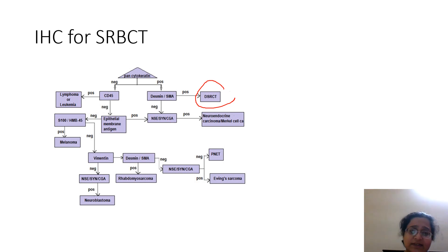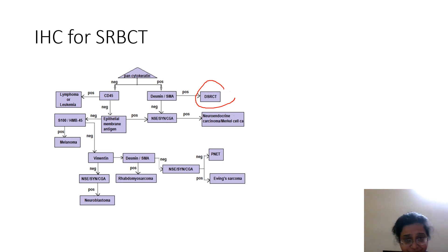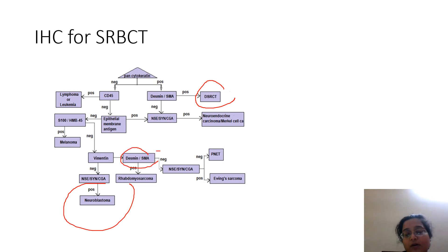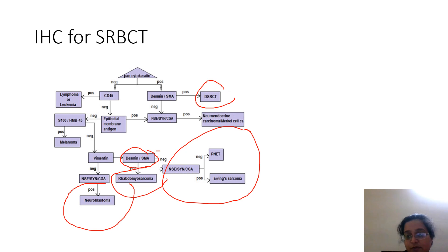If CD45 is negative, Pan-CK negative, EMA positive, and S100 negative, go for neuroendocrine markers. If melanoma markers are negative, check vimentin — if negative, think neuroblastoma and CD99. Desmin or MyoD1 positivity points to rhabdomyosarcoma. Neuroendocrine markers are always a differential for small round cell tumors, and PNET/Ewing's sarcoma uses CD99 as a common marker; NKX2.2 is very important in Ewing's sarcoma.